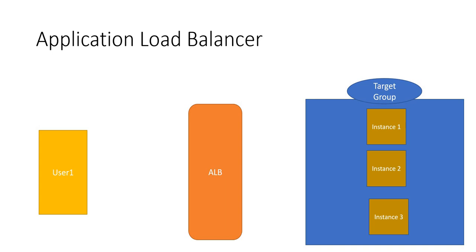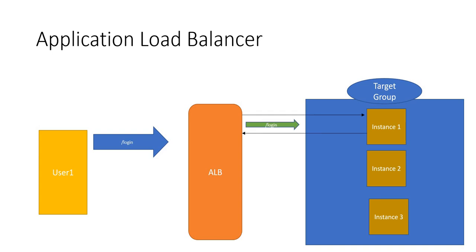First we need to understand how traditional systems work without sticky sessions. In this diagram you can see we have an application load balancer and a user behind it. Generally web systems start with a login system. The user tries to login and the application load balancer forwards this request to instance one and gives a login successful response. After getting login successful, suppose the user wants to do profile settings and the application load balancer forwards this second profile settings request to instance two, where instance two does not have an idea that the person has already logged in on instance one. As you can see, the user session is not maintained throughout all the instances.